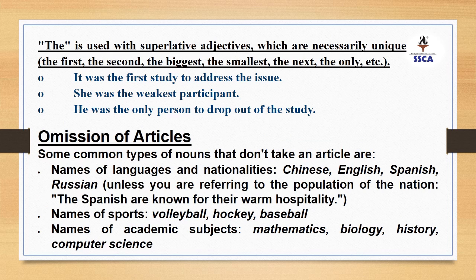Another use of 'the' is with superlative adjectives, which are necessarily unique — the first, the second, the biggest, the smallest, the next, the only, etc. There are three degrees of adjectives: positive, comparative, and superlative. We always use 'the' with the superlative degree. For example, 'It was the first study to address the issue' — 'first' is a superlative adjective, so we use 'the'. 'She was the weakest participant' — 'weakest' is superlative. 'He was the only person to drop out of the study' — 'only' is treated as a superlative adjective, so we use 'the'.